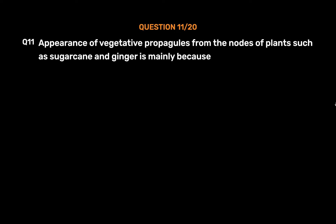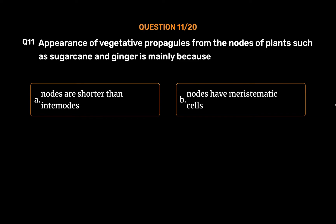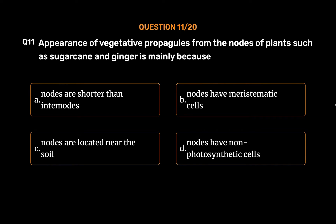Question No. 11: Appearance of vegetative propagules from the nodes of plants such as sugarcane and ginger is mainly because. Option A: Nodes are shorter than internodes. Option B: Nodes have meristematic cells. Option C: Nodes are located near the soil. Option D: Nodes have non-photosynthetic cells. The correct answer is Option B: Nodes have meristematic cells.